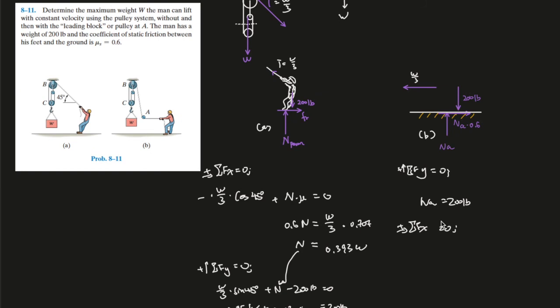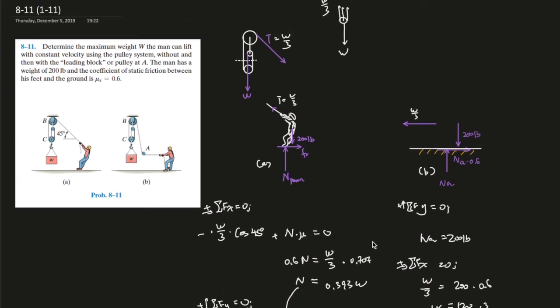And over here, it will be W over 3 equals 200 pounds times 0.6. There's 120 times 3, give us W, and W equals 360 pounds. And here we have it. So, let's write over here, W equals 360 pounds. And over here, W equals 318 pounds.